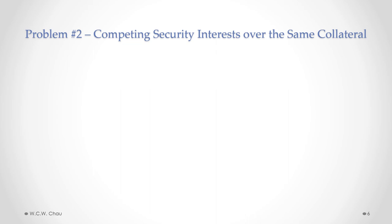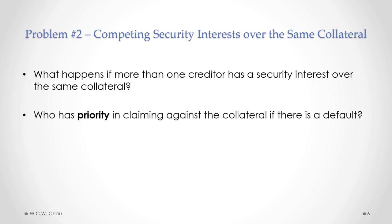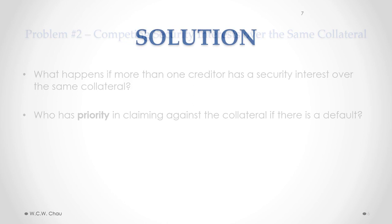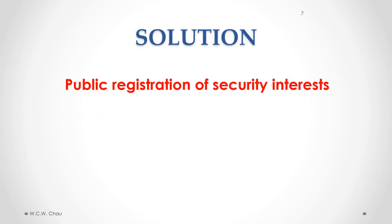The questions raised by Problem Number Two are: what happens if more than one creditor has a security interest over the same collateral, and who has priority in claiming against the collateral if there is a default? The solution to these problems is the public registration of security interests.